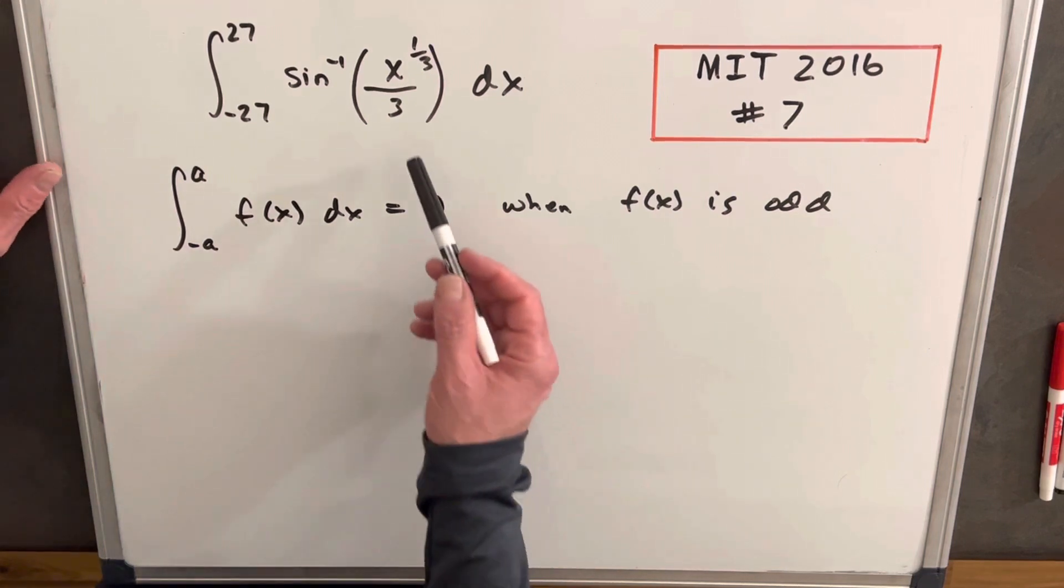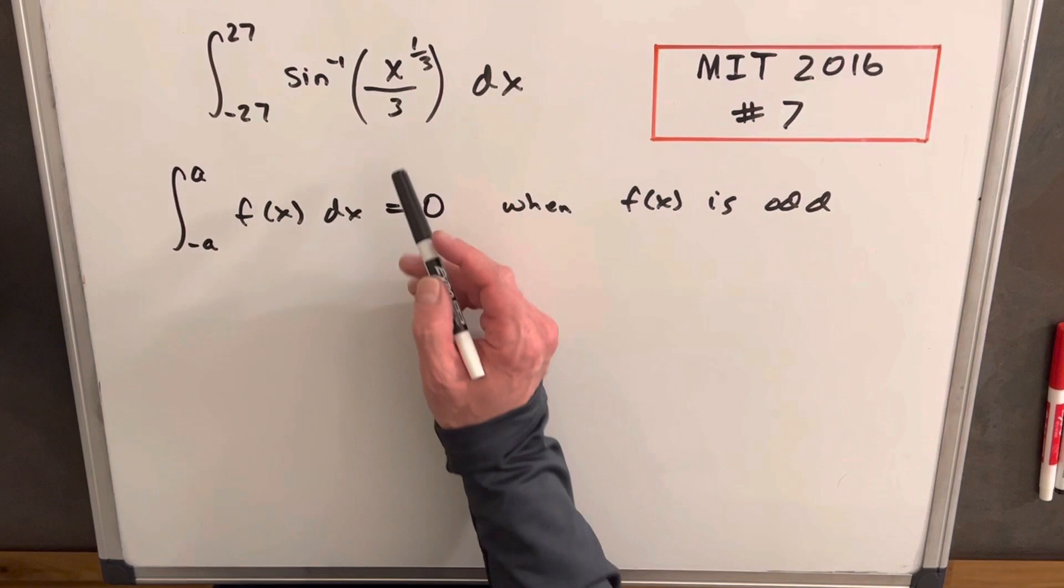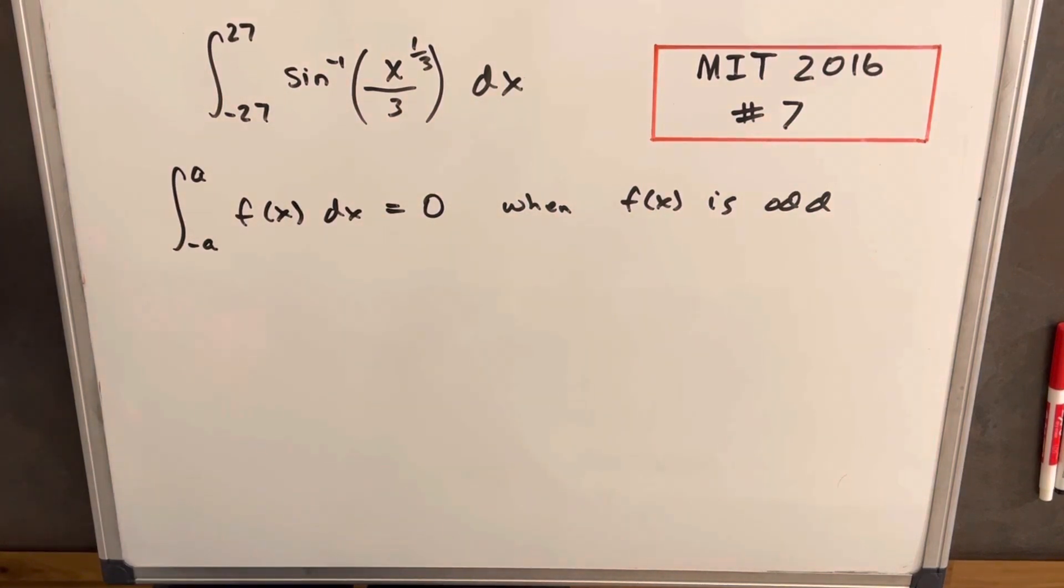And then as far as evaluating that this is an odd function quickly, we know a cube root is an odd function, and you can kind of think about like if you get the cube root of minus 8, you get out minus 2.